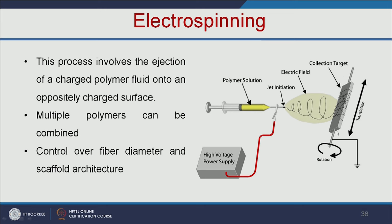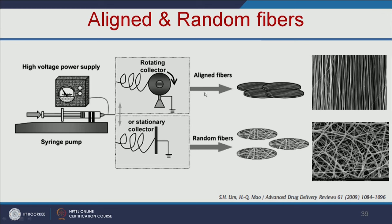Electrospinning is available in vertical as well as horizontal setups. The collector can be a static collector or a rotating drum collector. Using a rotating collector, we can get aligned fibers, and using a stationary collector, we get random fibers. Under the scanning electron microscope, you get beautiful aligned fibers with the rotating collector and random fibers with the stationary collector.